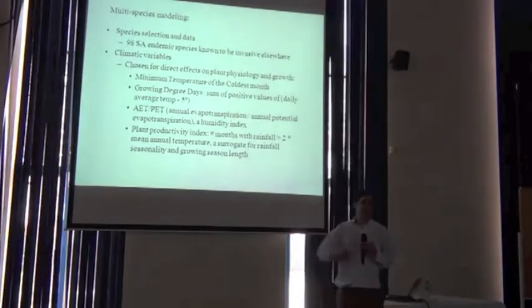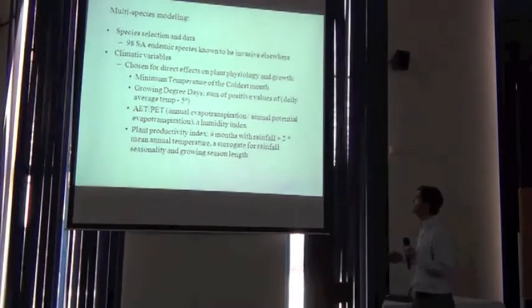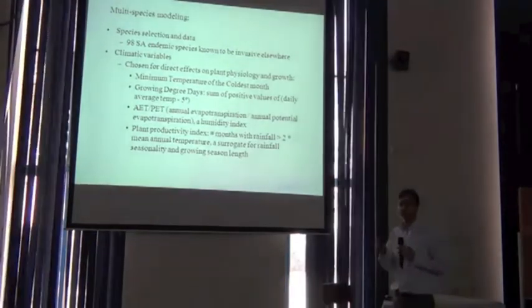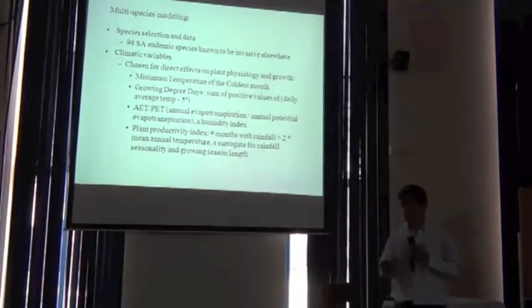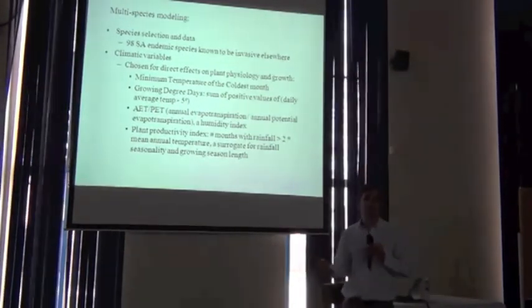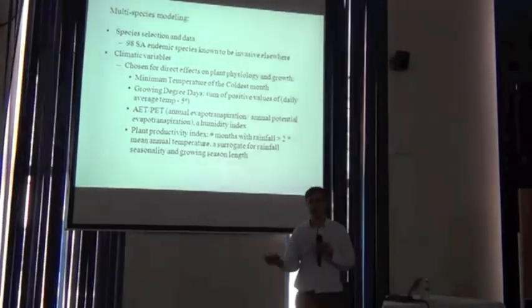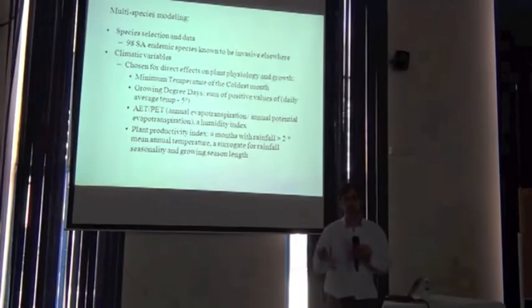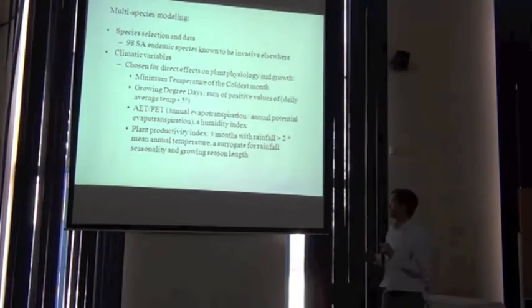A couple of slides run through the methodology, trying to relate this back to exactly the kinds of things you've learned in the last few days. They selected a bunch of species - South African plants that are endemic to South Africa, native to South Africa, but known to be at risk or already invading other regions of the world. They got hold of a whole bunch of presence and absence occurrence records for those species, and have a very big data set to work with, collecting occurrence records exactly as we've been talking about.